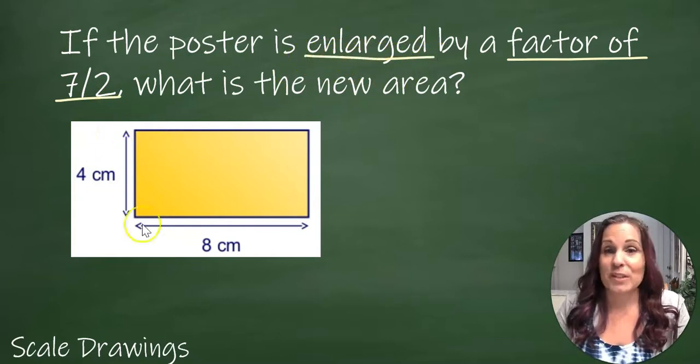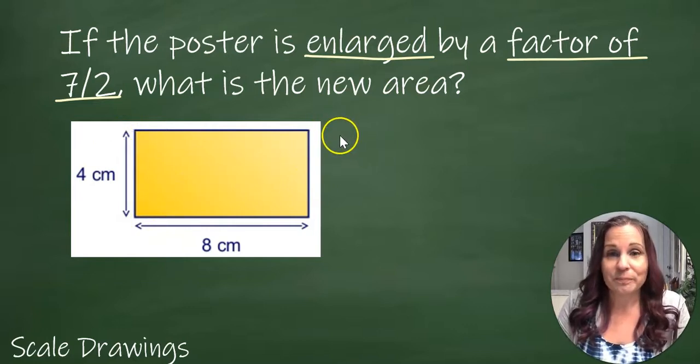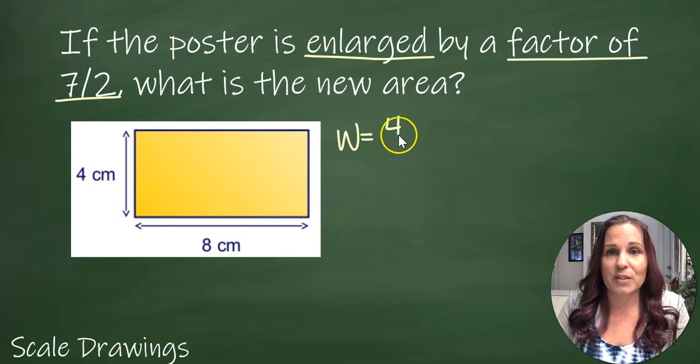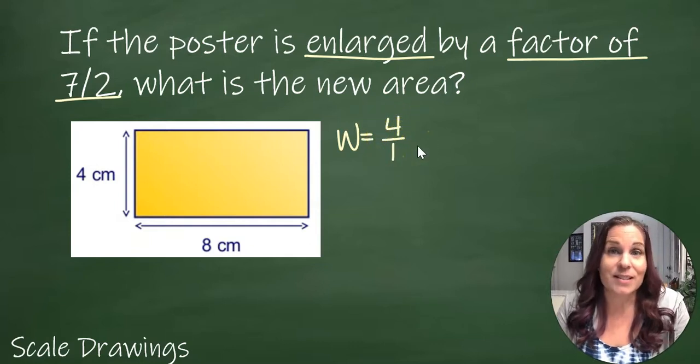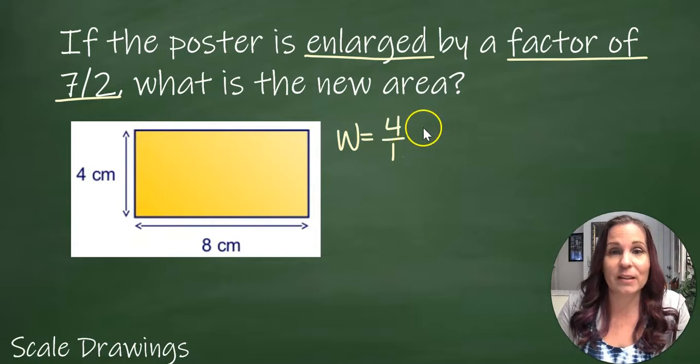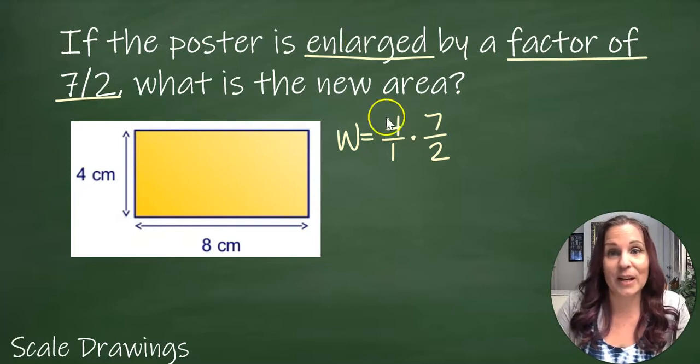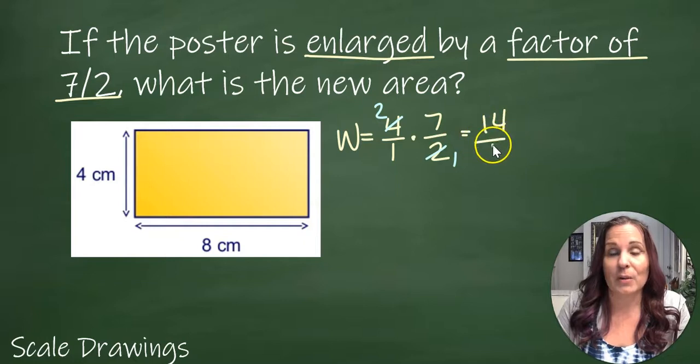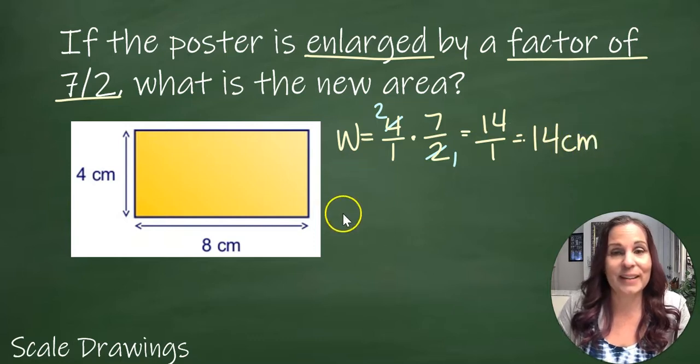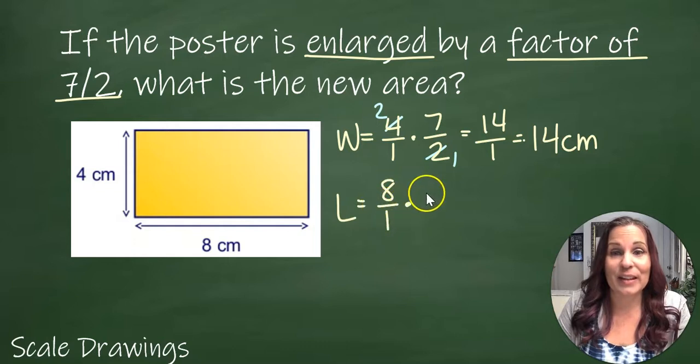Let's do the same thing though. My original width was 4. I'm going to write it as a fraction because it's easier to work with two fractions if I'm multiplying. I'm going to multiply by the scale factor. I've got some canceling I can do—this is divisible by 2 and this is divisible by 2. So on top I end up with 2 times 7 which is 14, on the bottom it's 1, so I get 14 centimeters.